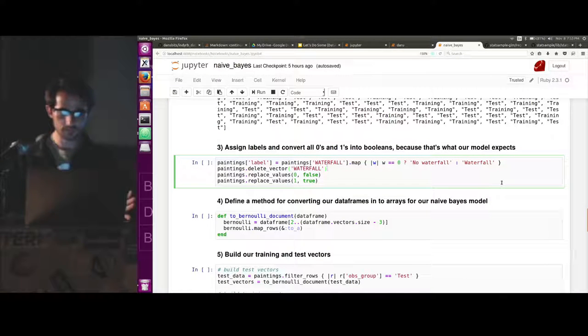We assign labels like a new variable that is labeled based on the waterfall variable. And it's no waterfall or waterfall. And we delete the waterfall variable so it doesn't mess with our classifier.